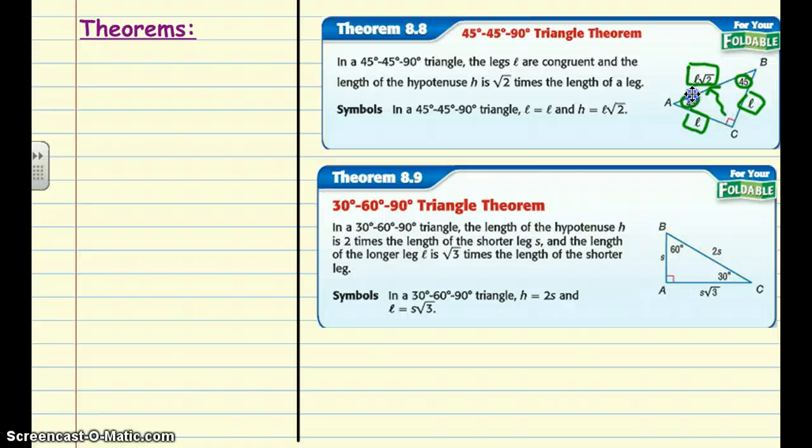The second property is that if we know we have a 30-60-90 triangle, the side opposite the 30-degree angle we call that s. The side opposite the 60-degree angle is s times the square root of 3.